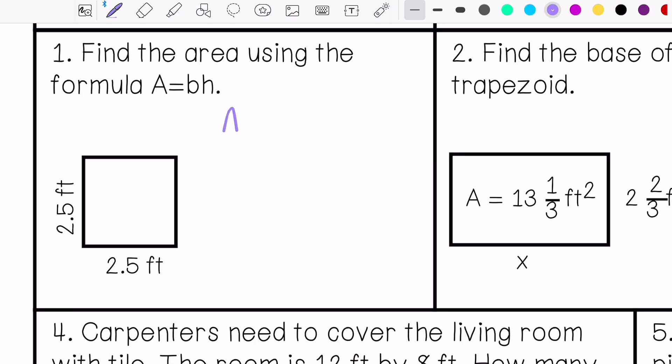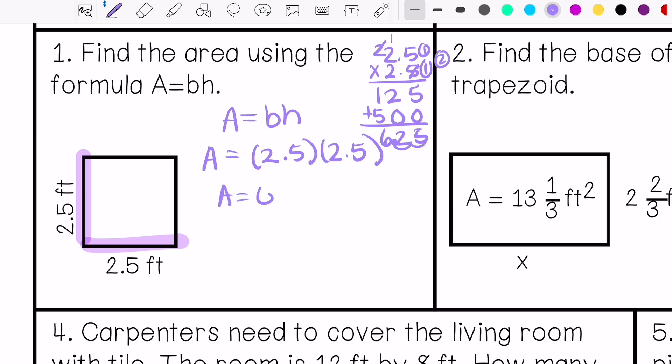Alright, find the area using area equals base times height. This is my base. This is my height. I'm finding the area. So 2.5 times 2.5. This is different than 2.5 times 2, so my area is 6.25 feet squared.